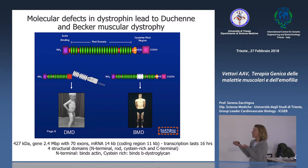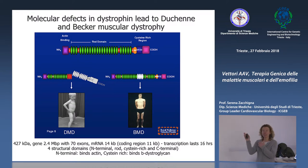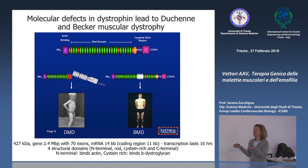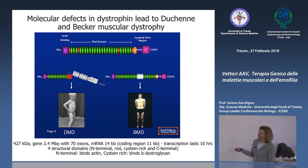Nelle persone con Becker la funzionalità muscolare è ridotta ma hanno una vita decente. Al contrario, nei bambini Duchenne la mutazione produce una proteina tronca che manca dell'estremità C-terminale, perdendo la funzione di collegamento della distrofina: questi bambini sviluppano una grave distrofia muscolare e muoiono a pochi anni di vita.